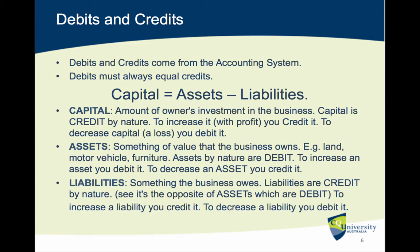Capital equals assets minus liabilities. Capital is the amount of the owner's investment in the business — it is a credit by nature. To increase it, for example if you have a profit, you credit the account; to decrease capital where you make a loss, you debit it. Assets are something of value that the business owns — for example, land, a motor vehicle, furniture. Assets by nature are debits: to increase an asset, you debit it; to decrease an asset, you credit it.